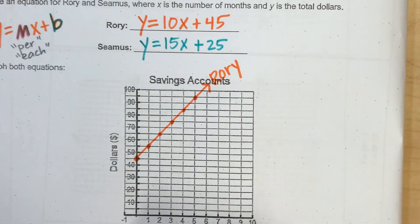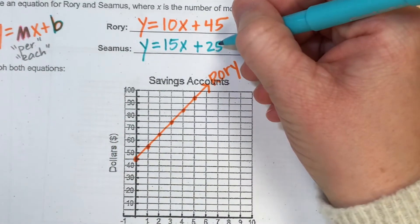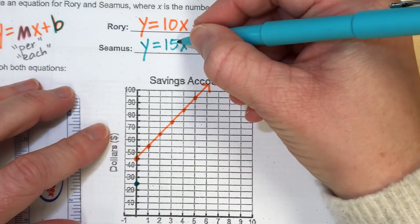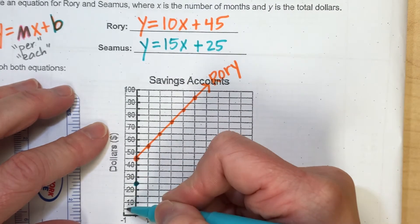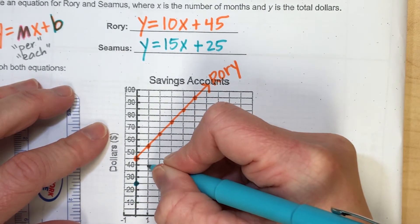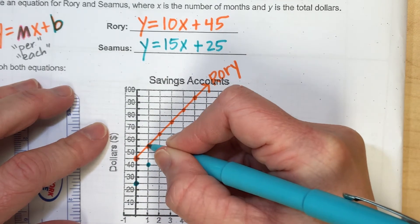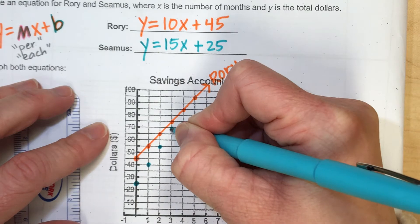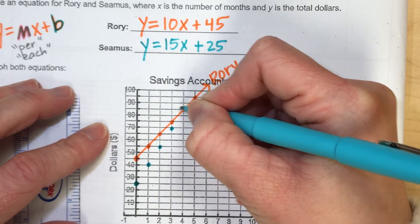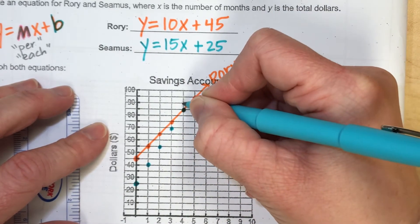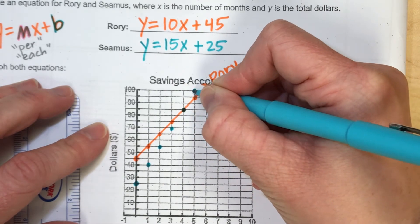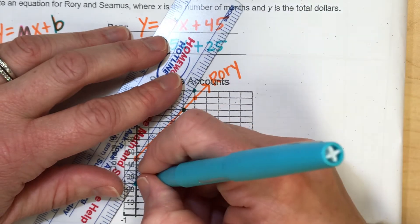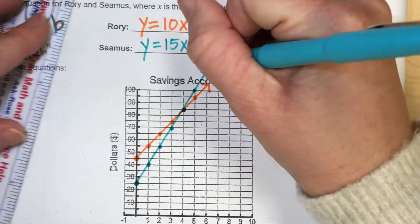And now I'm going to graph my other line in blue here, starting at $25, but now saving $15. And notice these go by fives. So I'm going to go up 5, 10, 15 in one month. 5, 10, 15 in another month. 5, 10, 15 in one more month. I see that point that we connected. 5, 10, 15 over in a month. And so this line is for Seamus.